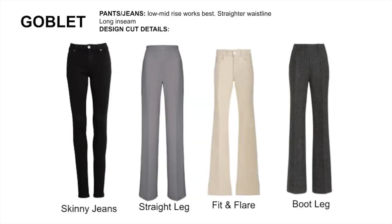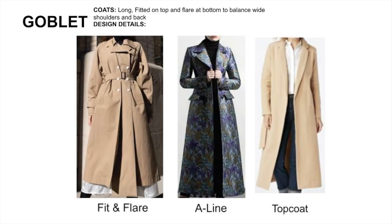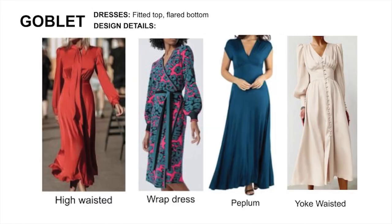Pants and jeans: low to mid-rise works best for the long torso and short hips. The inseam should be long and the waistline only slightly tapered. For jackets, make sure it's fitted across the shoulders, roomy for the heavy bust and wide back, with a nipped-in waist and flare below the waist to balance off the wide shoulders. For coats, make sure the bottom is flared to balance the top, and longer coats work great for long legs. For dresses, accentuate the upper waist and flare the bottom to offset the wide top.